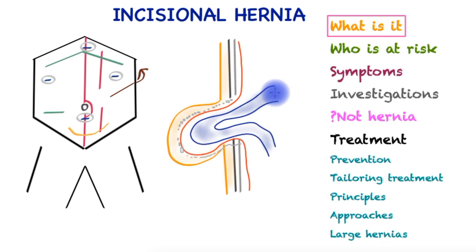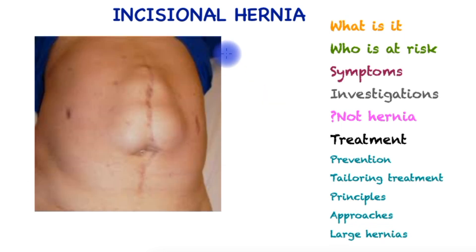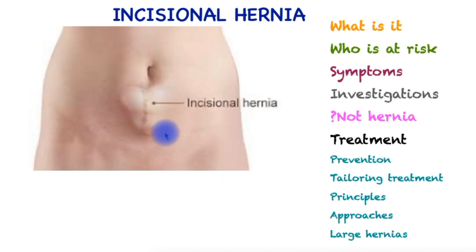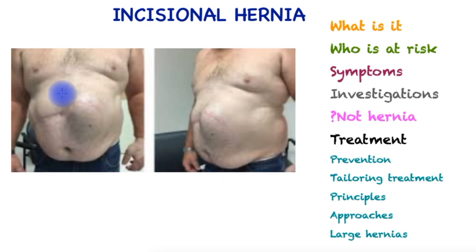In this example we can see the small bowel traversing. Now looking at real-world examples of incisional hernia: this is the midline scar with a bulge forming, this is a smaller example of the same, and this is a much larger incisional hernia in a transverse incision.